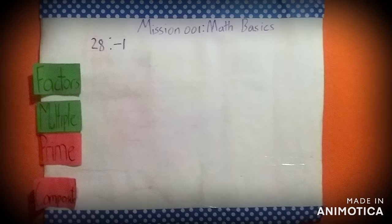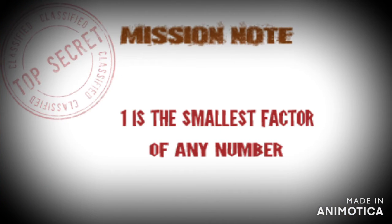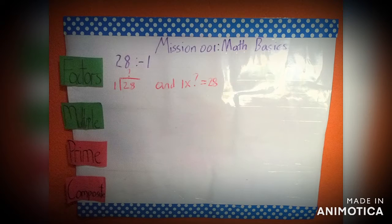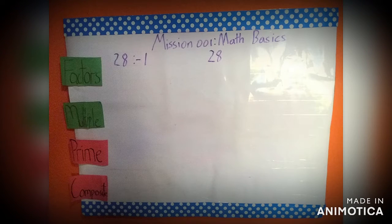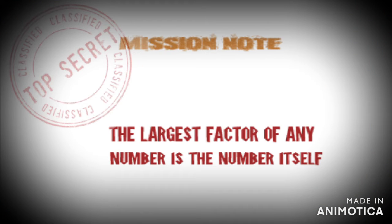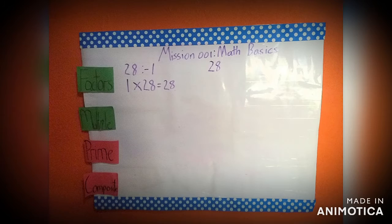Let's take, for example, 28. To find all the factors, let's start by writing the smallest counting number, which is 1. This is your first mission note: 1 is the smallest factor of any number. 1 divided into 28 equals a whole number, and 1 times that whole number equals 28. That unknown answer is 28, so let's place it at the end of our line. Next mission note: the largest factor of any number is the number itself.